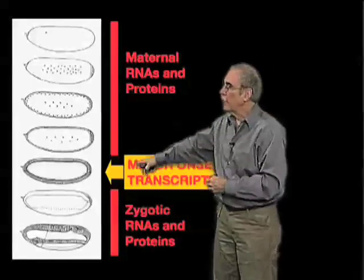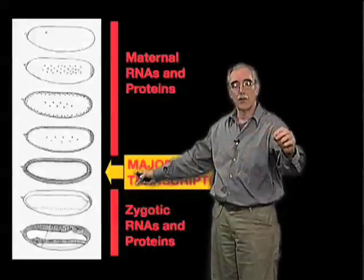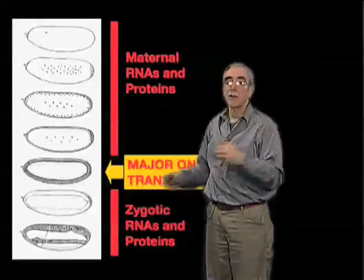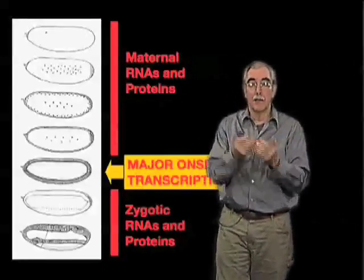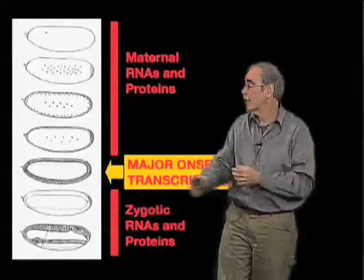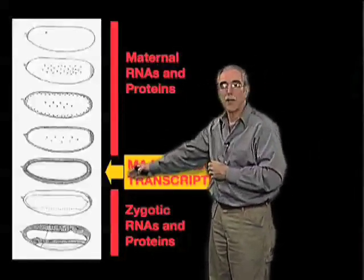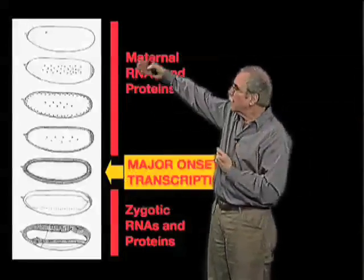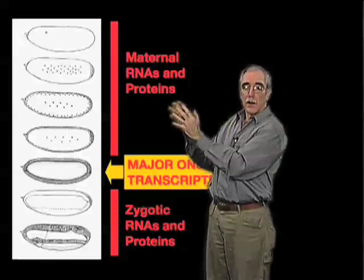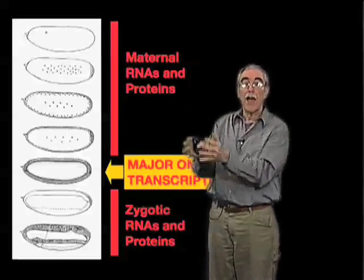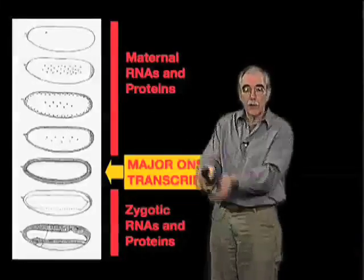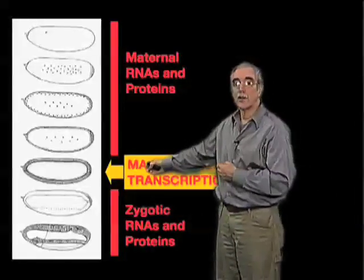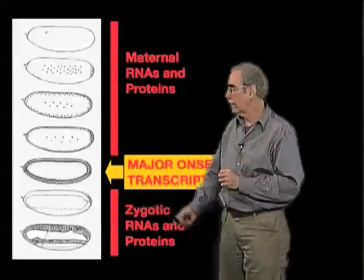Once those repetitive cycles are done and the embryo wants to do something new, it begins to transcribe its own genome — it begins to make what we call zygotic RNAs and zygotic proteins. This becomes a very interesting point in development, because for the first two and a half hours the embryo has been doing something repetitive using only maternally supplied gene products. Then it begins to transcribe specific genes required to go on to the next step in development. This stage marks not only where something new begins — mitosis stops, cells become distinct from each other — but it's also associated with the addition of new gene products.